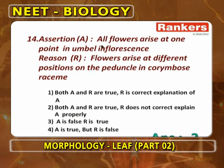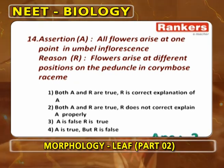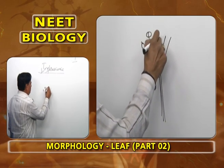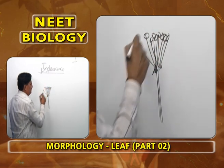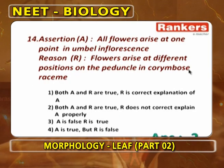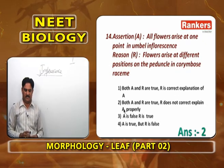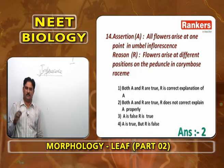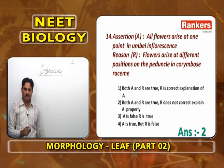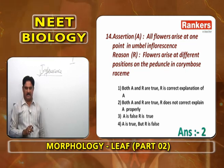Assertion: all flowers arise at one point in umbel inflorescence — correct, because peduncle stops growth, bracts form an involucre, and all pedicellate flowers develop from a single point. Reason: flowers arise at different positions on the peduncle in Coriandrum's racimose — also correct. But both are true and not related to each other, so both A and R are correct but R is not the correct explanation of A.